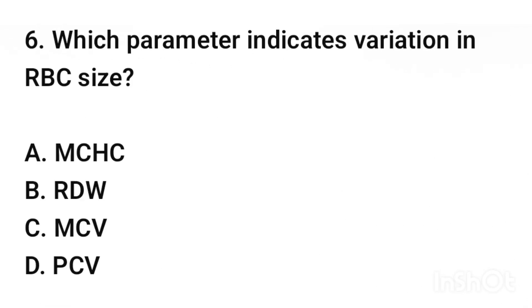Question number 6. Which parameter indicates variation in RBC size? The correct answer is option B: RDW (Red Cell Distribution Width).